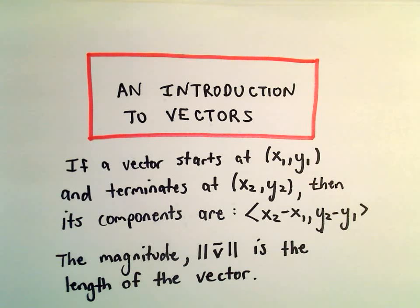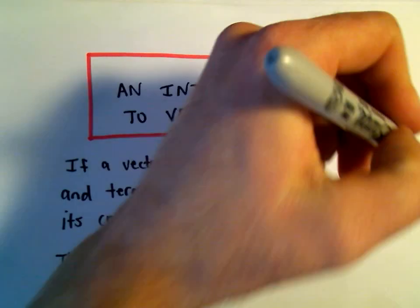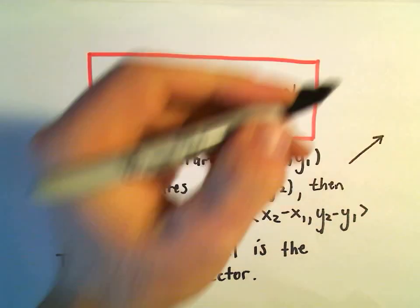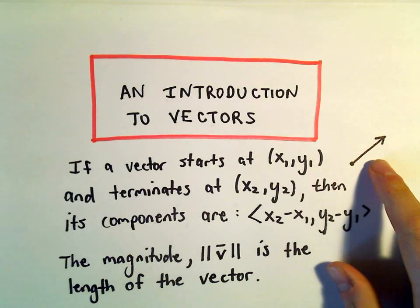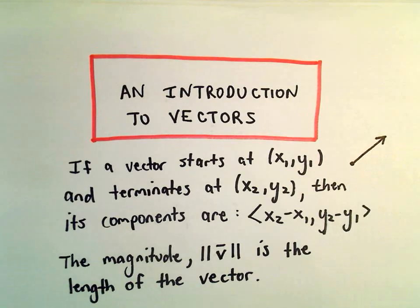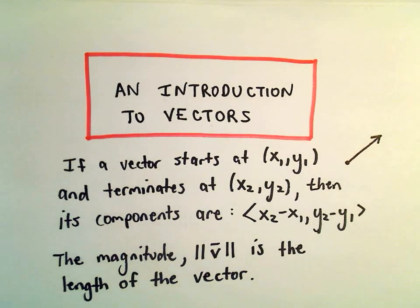All right, in this video we're going to do a little introduction to vectors. All vectors are, they're basically, we just represent them with little arrows, and all they represent are quantities that have both a magnitude and a direction associated with them. Very useful things.